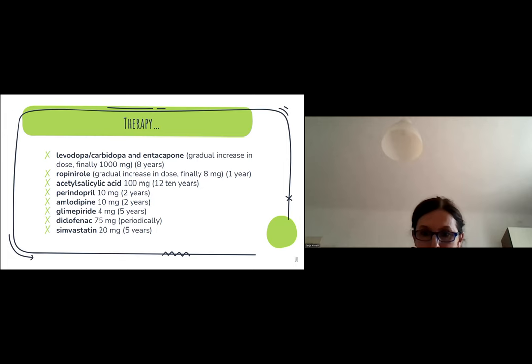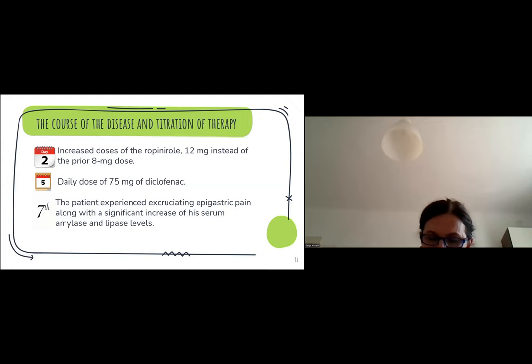Here's the course of the disease and titration of therapy in the hospital. On the second day of hospitalization, the patient received increased dose of ropinirole 12 mg instead of prior 8 mg dose for more effective control of extrapyramidal symptoms. On the fifth day, the patient received 75 mg of diclofenac intramuscularly to treat low back pain. On the seventh day, the patient experienced epigastric pain along with significant increase of serum amylase and lipase levels.